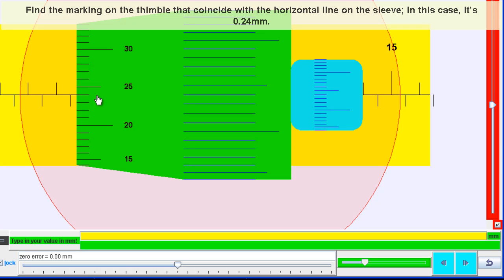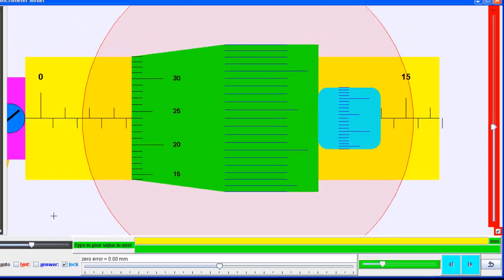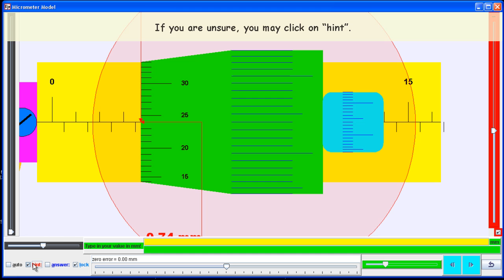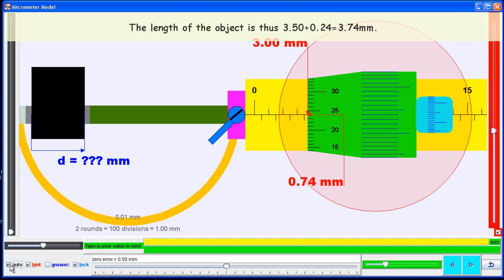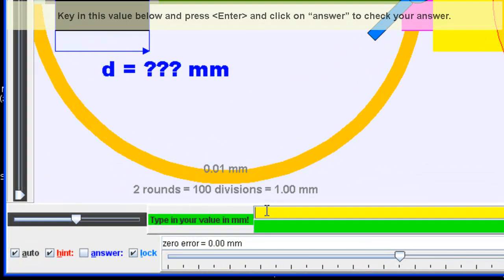To find the answer, you look at the 0.24 mm mark on the thimble. Adding the two numbers together, you will find that the answer is 3.50 plus 0.24 to give you the final answer.